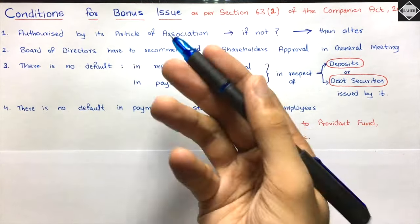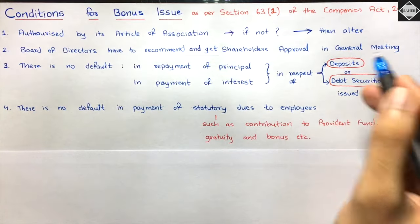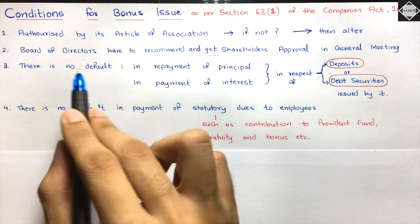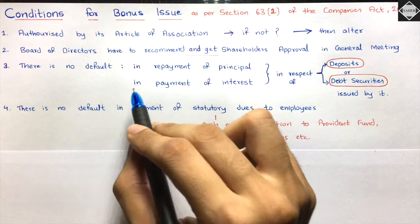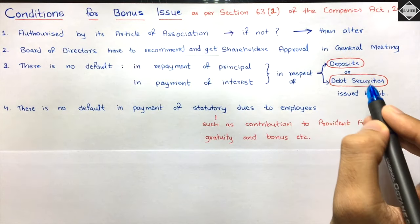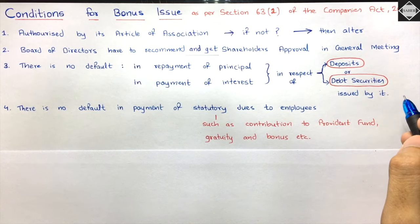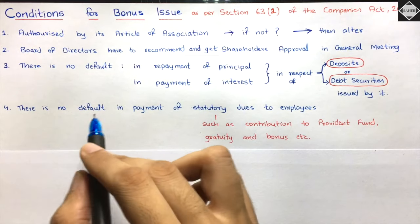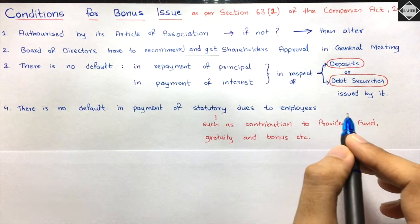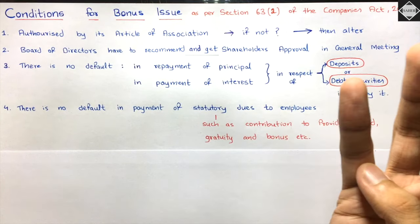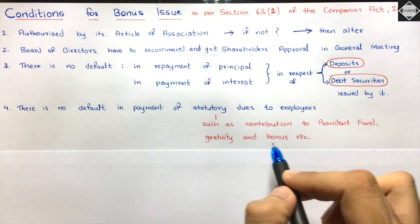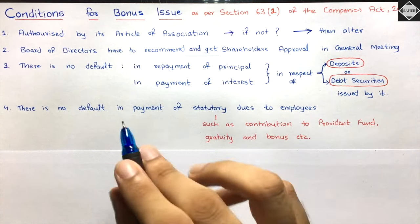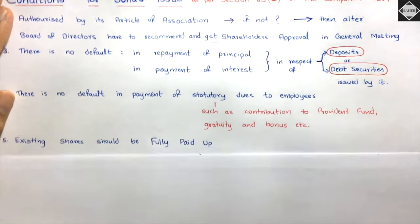Second condition: the Board of Directors must recommend the bonus issue and then get shareholders' authorization in the general meeting. Third condition: there should be no default in repayment of principal and payment of interest in respect of public deposits or debt securities issued by the company. Fourth: there should be no default in payment of statutory dues to employees - gratuity, bonus to employees, provident fund, ESI contribution.